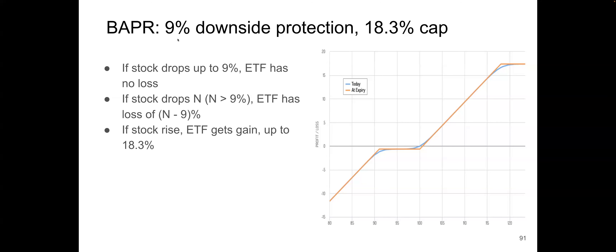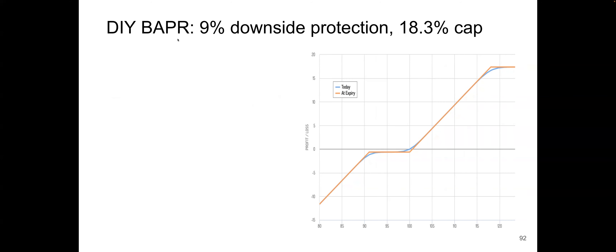But if the stock rises, you gain, and you gain up to 18.3%. If you look at the profit/loss figure, assume today's stock price is 100. As it goes up higher and higher, we get a higher gain, but it will be clamped at 18%. And if the stock goes lower, it will stay flat until the 9% point, then it starts dropping.